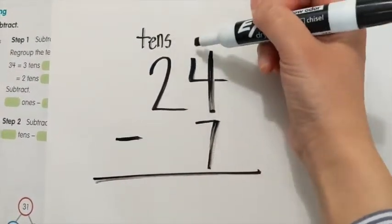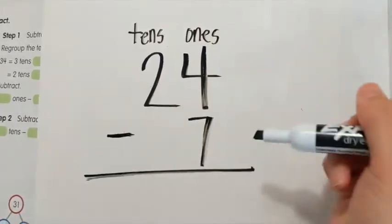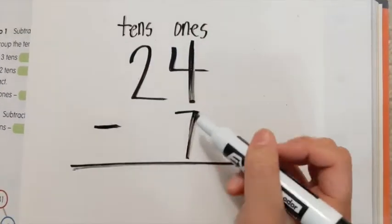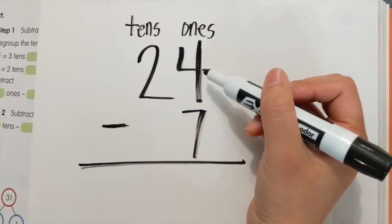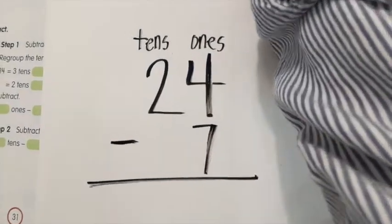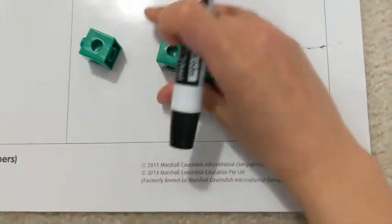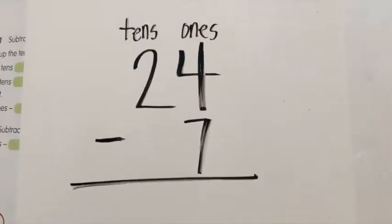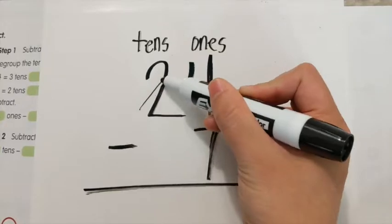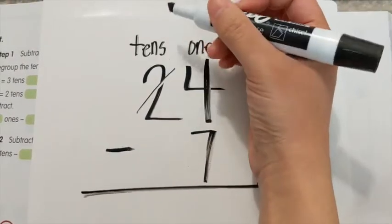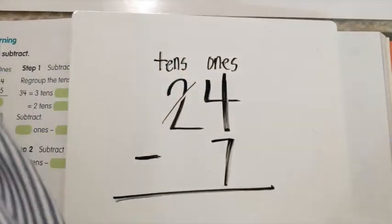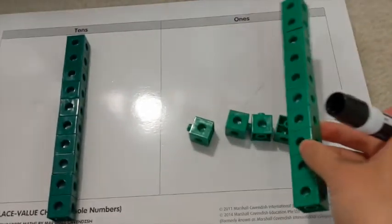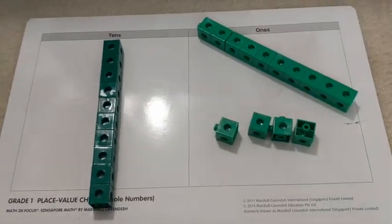Remember, this is the tens place and this is the ones place. Always start with the ones place — we've got to subtract from the ones place first. I'm going to take my seven from the four ones. What do you notice? Are there enough ones for me to subtract? No. Which is why we're going to have to regroup. So let's regroup — let's take one of these tens. Here's a picture of what I'm talking about: two ten rods. Let's take one of these and simply move it over to the ones place, which we call regroup.